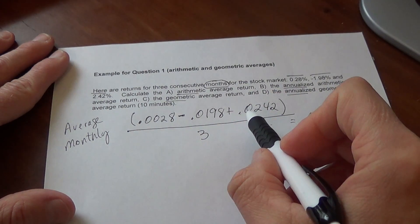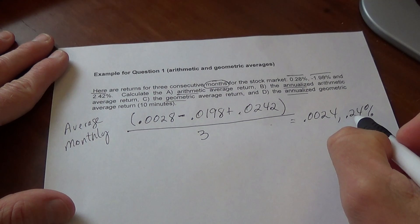To annualize monthly, since we're doing monthly, when we annualize it, we take that monthly average and multiply by 12. Multiply by 12 because there's 12 months in the year.